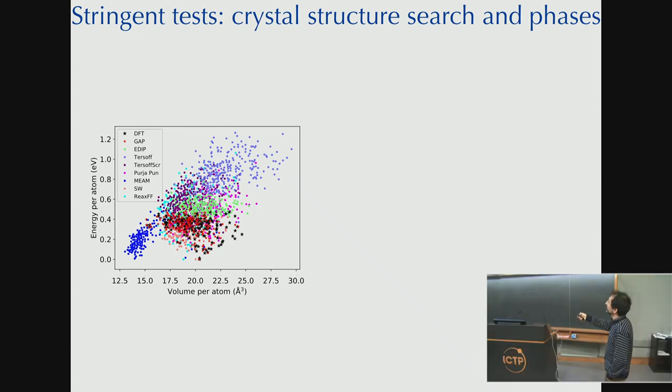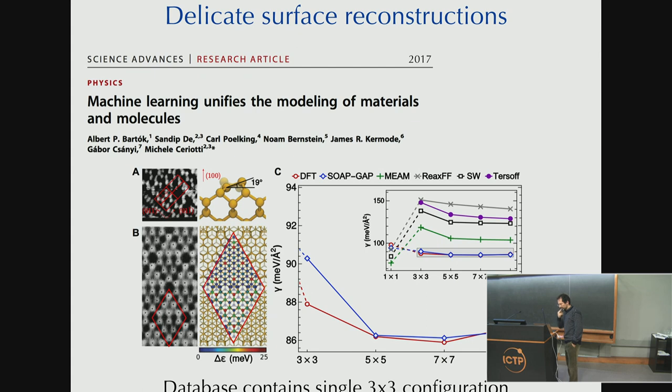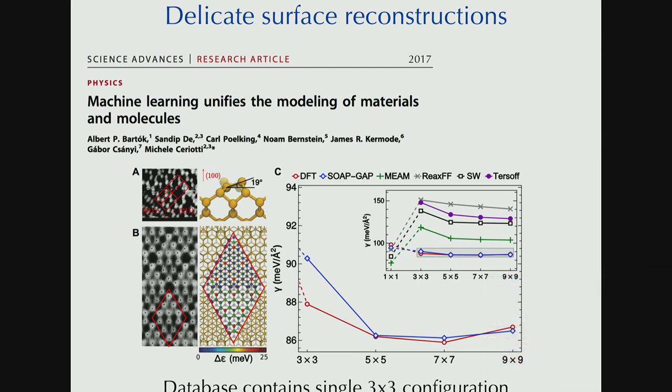There are some untargeted properties that are really very far from what we had in the database. And it's really not bad for those either. Not as good as for the targeted properties, but not much worse. I want to finish with transferability and future thoughts in the last minute. The most stringent tests that we can think of are crystal structure search. So here is crystal structure search from random initial conditions with all the different potentials. And instead of letting you stare at those points, let me just give you convex hulls. And the machine learned model is the only one that's vaguely sensible compared to the density functional theory. Black and red are those.